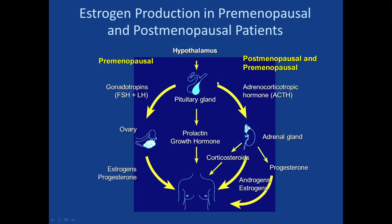Based on those pathways, what would be potential therapeutic targets for a woman with estrogen receptor positive breast cancer? One approach is blocking the estrogen receptor itself. An old school drug called tamoxifen — a selective estrogen receptor modulator — has done very well. It blocks the effect of the estrogen receptor on the breast tissue, so your body still produces estrogen, but its effect on breast tissue is blocked.